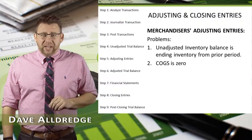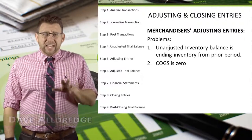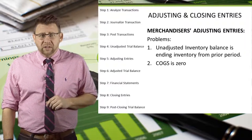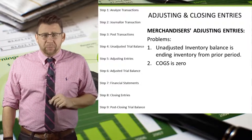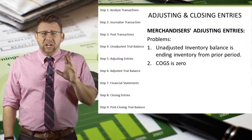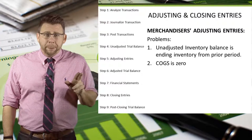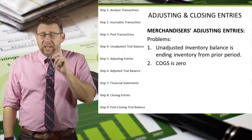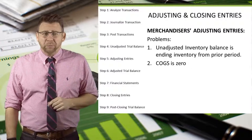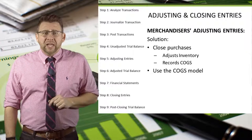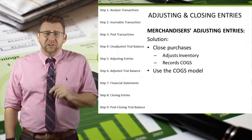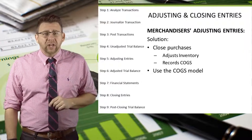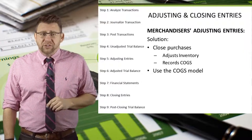The adjusting entries for merchandisers are basically the same as those for service firms, with the exception of adjusting the inventory account. This is a problem for periodic merchandisers because the unadjusted trial balance for inventory is the prior month's ending balance. Additionally, cost of goods sold is zero. The solution to this problem is using something we call the cost of goods sold model, which basically adjusts the inventory account and closes purchases to cost of goods sold.